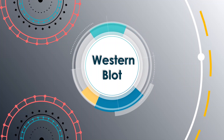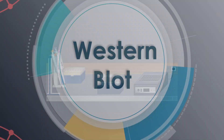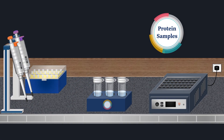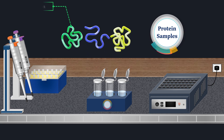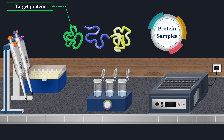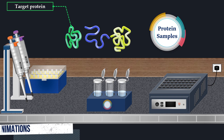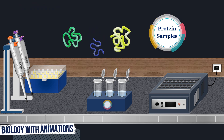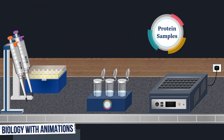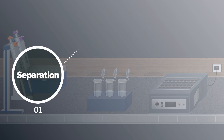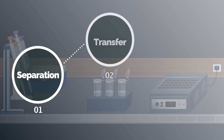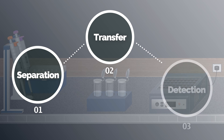Western blotting is an important technique used in cell and molecular biology for protein separation and detection. It enables the separation and identification of a specific protein of interest from a complex mixture of proteins, for example a cell lysate. A typical Western blot technique includes the following steps: separation by size, transfer of protein to a solid support, and detecting the target protein using antibodies.